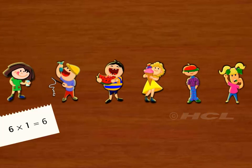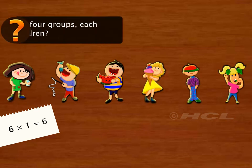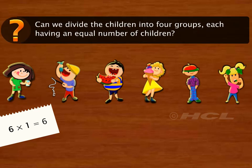Or we can have a single group with all six children in it. Can we divide the children into four groups, each having an equal number of children? Let's find out.